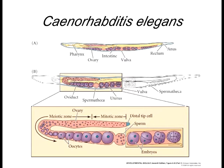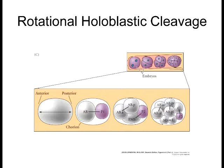Looking at C. elegans anatomy, they produce oocytes in one area and sperm in another — hermaphroditic, producing both types of gametes. They are holoblastic like sea urchins — the entire oocyte undergoes cleavage, with rotational cleavage playing a key role in the initial specification process. One important thing about C. elegans is that the initial oocyte doesn't have any polarity — the maternal components are spread out pretty much evenly throughout the entire oocyte.